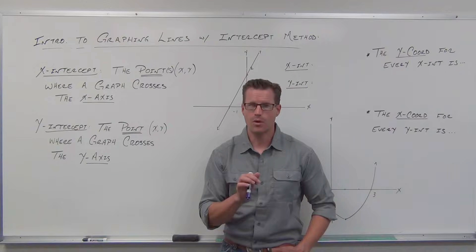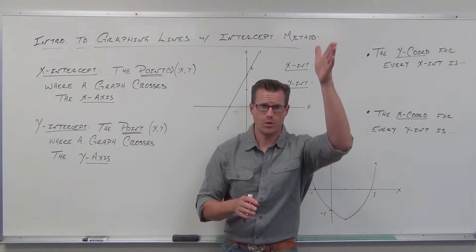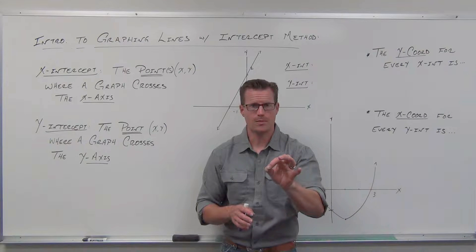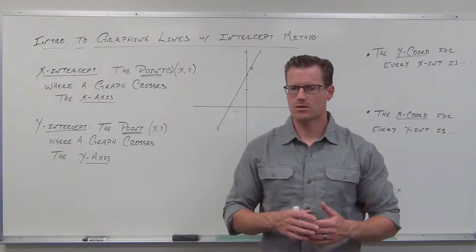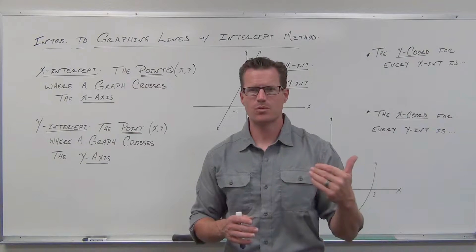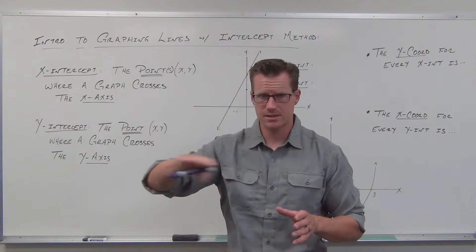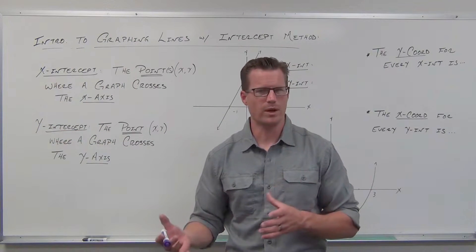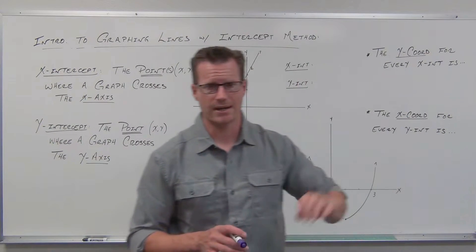One big thing: they are points. They're not just values. You wouldn't say x equals 5, because there are a lot of points where x equals 5. We would say 5 comma 0 — we're going to get to that in a minute. A y-intercept is the point on the graph where we cross the y-axis. X-intercept and y-intercept are very specific places where your graph crosses the x-axis or the y-axis, respectively. They're ordered pairs, so you have two numbers.